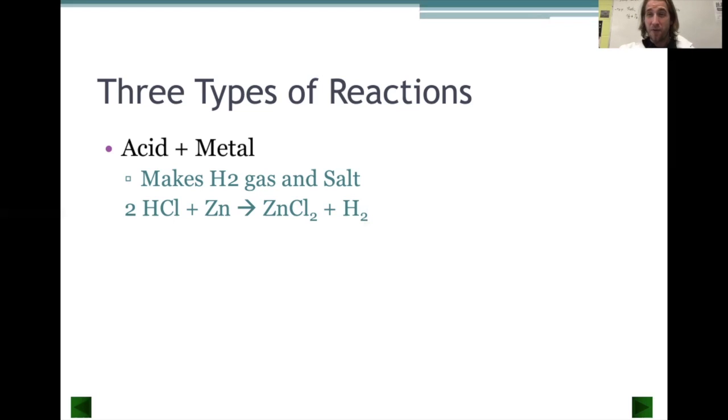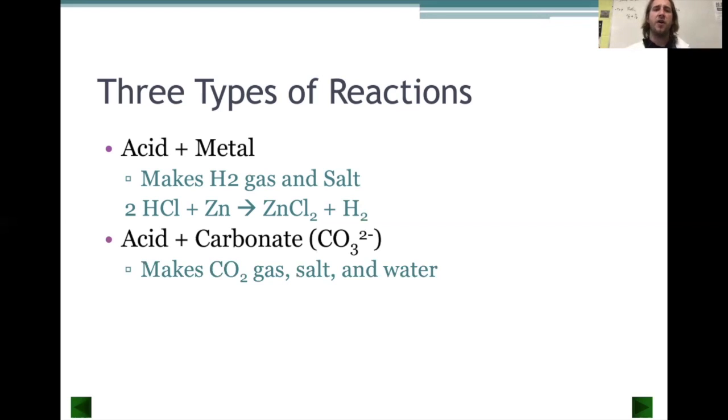Our second type of reaction is an acid plus a carbonate, CO₃²⁻. If you think about the stable compound that we have for carbonates, we know that carbonates like to form carbon dioxide. CO₃ changes to CO₂. And so that's our giveaway for our carbonates. Acid plus carbonate is going to form carbon dioxide gas, salt and water.